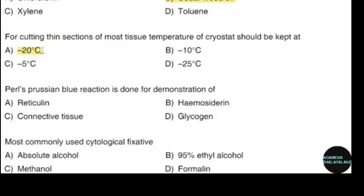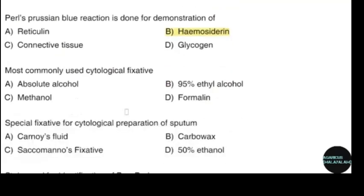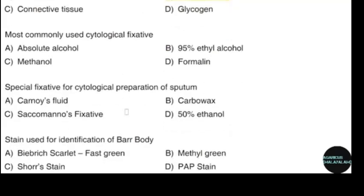Prussian blue reaction is done for demonstration of. Correct answer: option D — Hemosiderin. Most commonly used cytological fixative. Correct answer: option D — 95% ethyl alcohol.